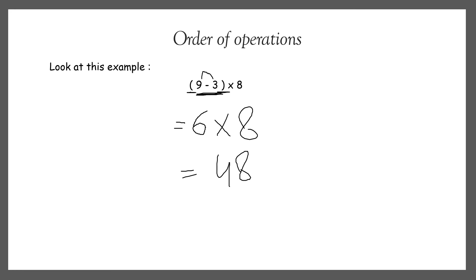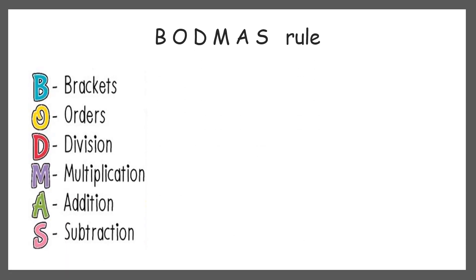For this we modify the rule to the BODMAS rule. Here B and O are extra: B means bracket, O means orders. Then we do division, multiplication, addition, and subtraction. Brackets are at the top, meaning we always have to solve the bracket first. If a bracket is not present, then we start with division. If that is also not present, then we do multiplication, then addition, and then subtraction.